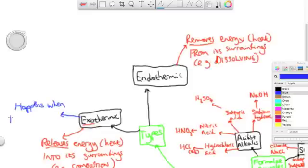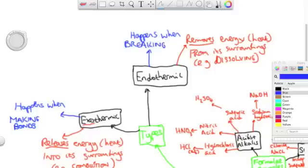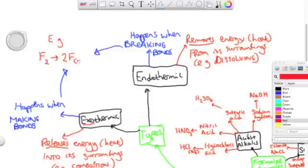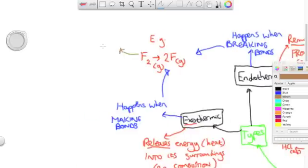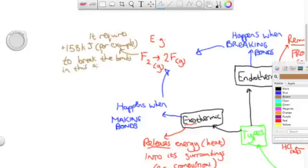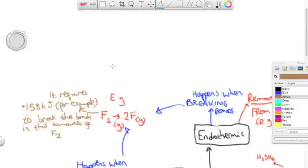Exothermic reactions happen when you're making bonds, when you're reforming bonds, whereas endothermic reactions happen when you're breaking bonds, which is kind of obvious really because you need to put energy in to break the bond so therefore the energy comes from the surroundings. If I take some fluorine diatomic and break it into two fluoride ions, it takes energy to break those bonds between the fluorine atoms and therefore that's an endothermic process.